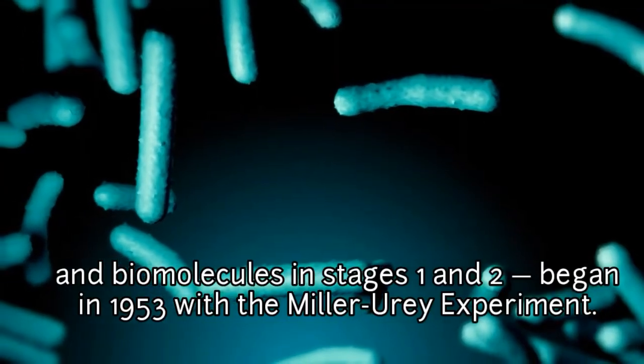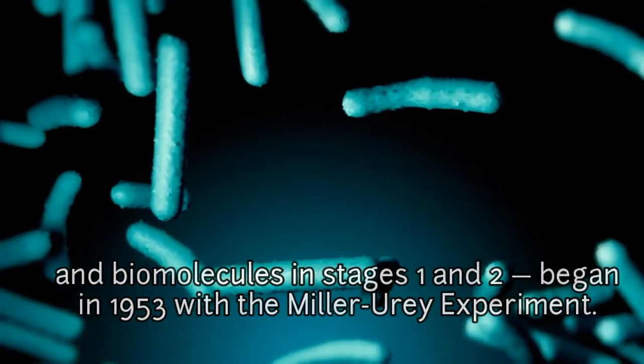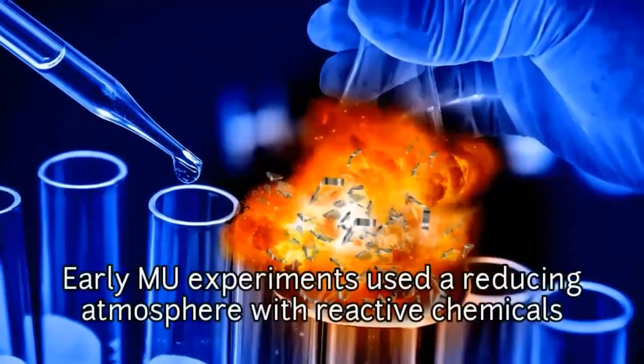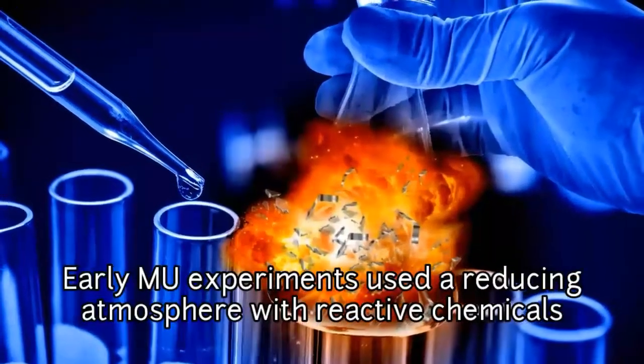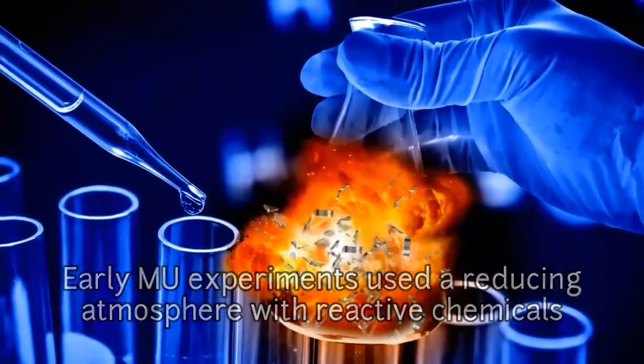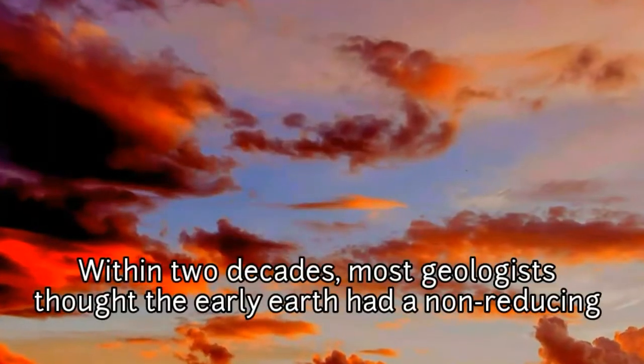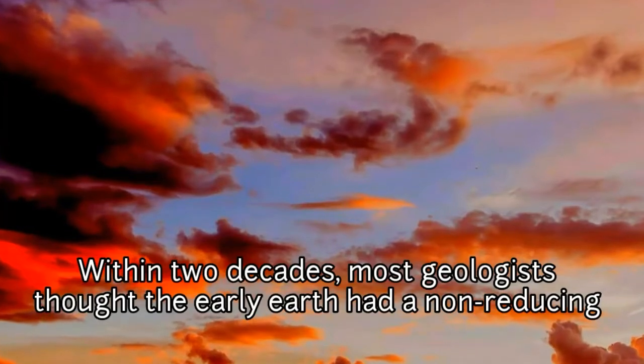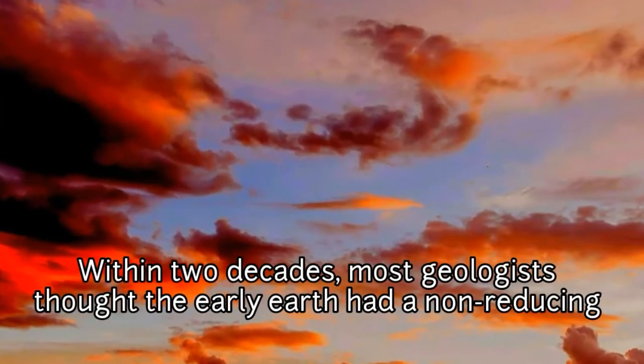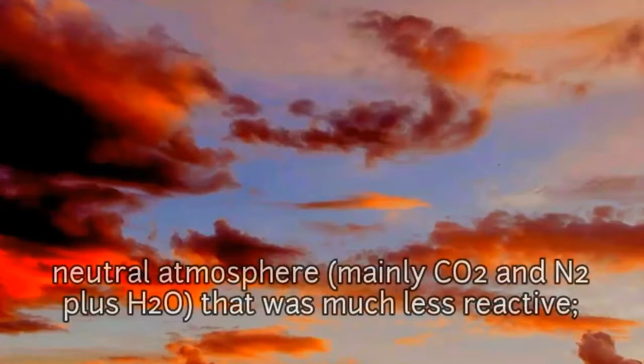Early Miller-Urey experiment used a reducing atmosphere with reactive chemicals: CH4, H2, and NH3 plus H2O. Within two decades, most geologists thought that early Earth had a non-reducing neutral atmosphere mainly CO2 and N2 plus H2O that was much less reactive.